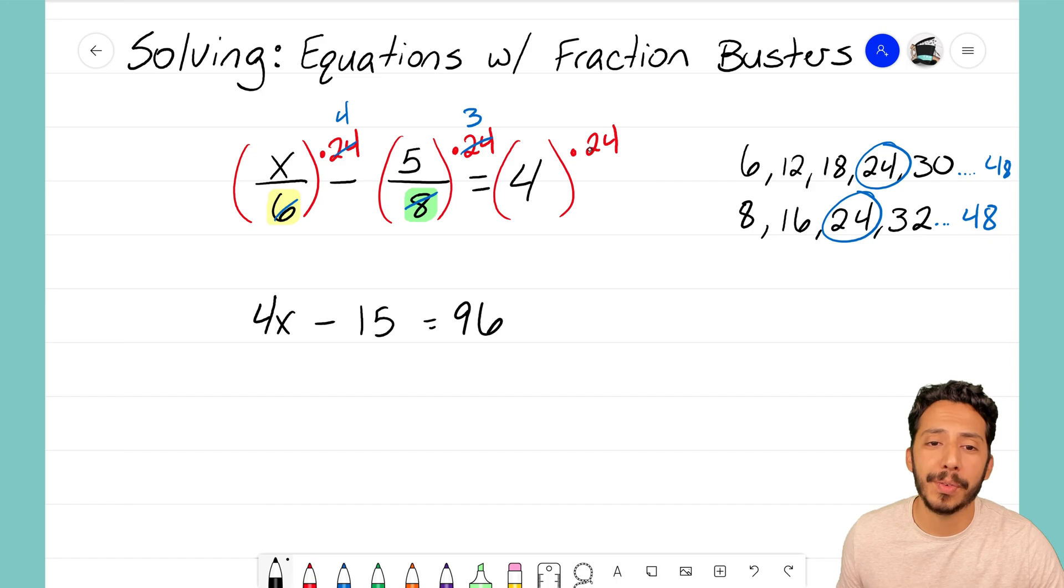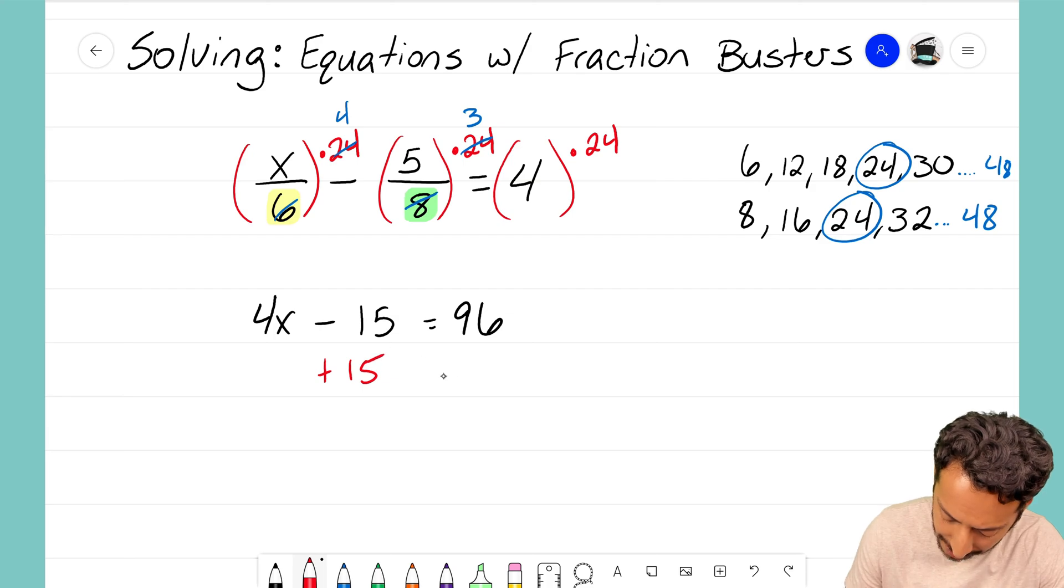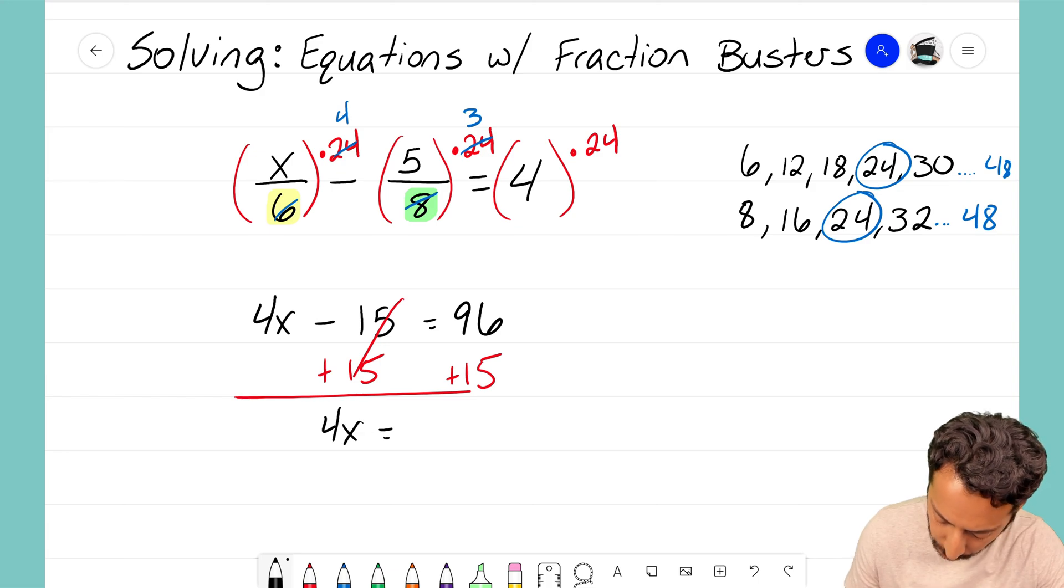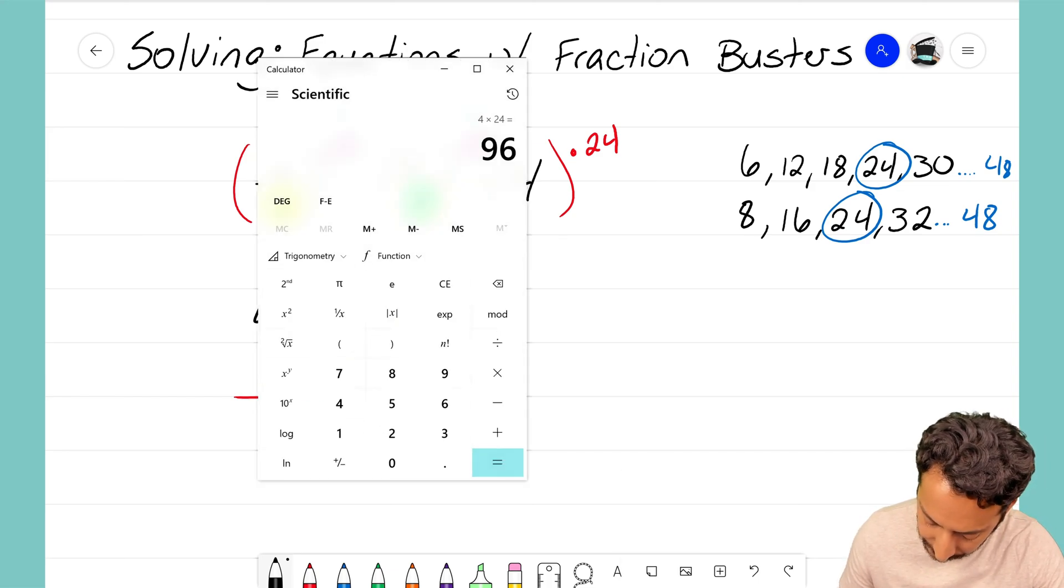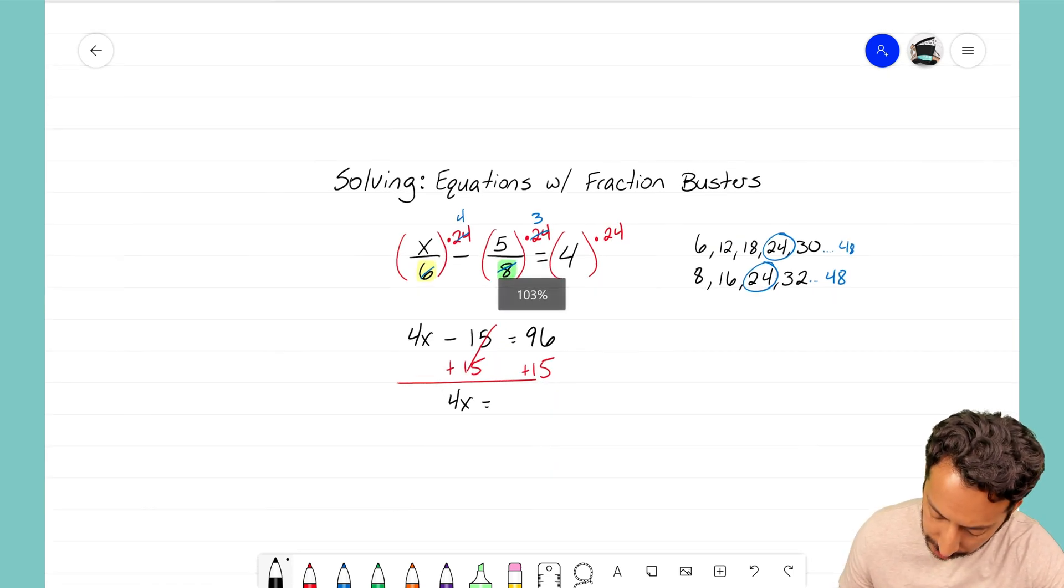by the number 24. All righty, let's go ahead and finish out this problem. I'm trying to solve for x, so I'm going to add 15 to both sides. Those 15 right there are going to cancel. I'll bring down the 4x equals 96 plus 15. I'll punch that into my calculator—that's going to equal 111.